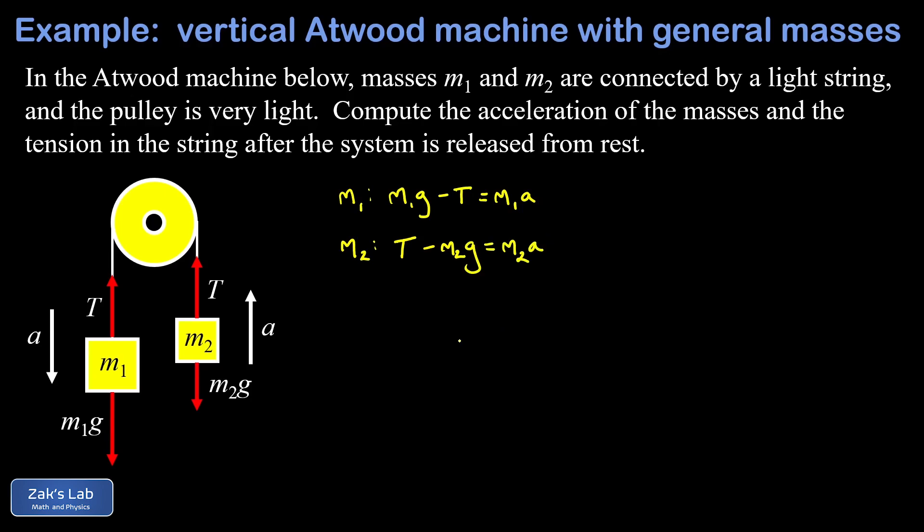You should notice that these are already set up for a quick elimination of one of the variables. If I add these two equations the T's are going to cancel. On the left side I get m1g minus m2g, and on the right side I get m1a plus m2a.